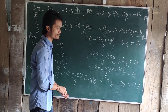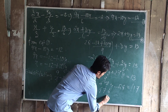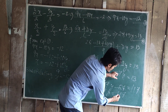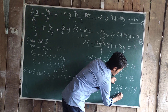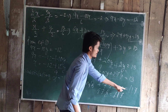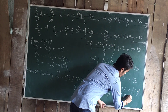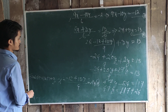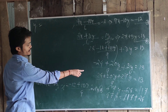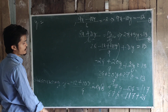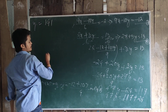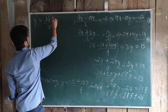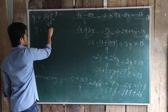So we get minus 24 plus 20y plus 27y is equal to 9 times 13, which is 117. That gives us 47y minus 24 equals 117. Moving minus 24 to that side as plus 24: 47y equals 117 plus 24, which is 141. So y equals 141 divided by 47, which gives y equal to 3.